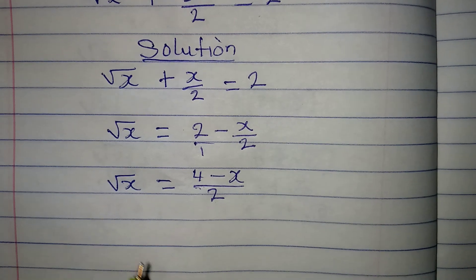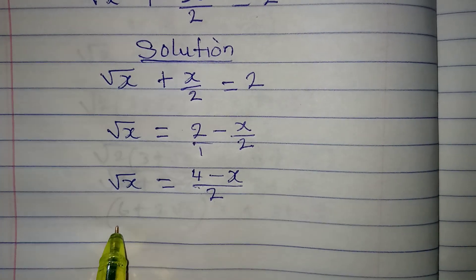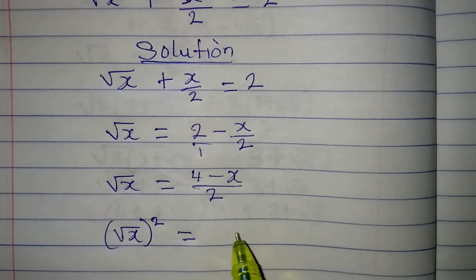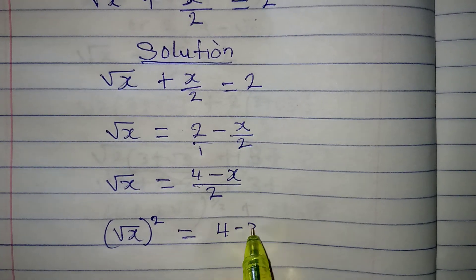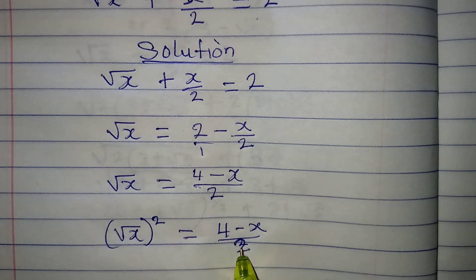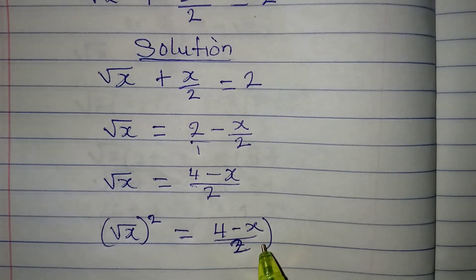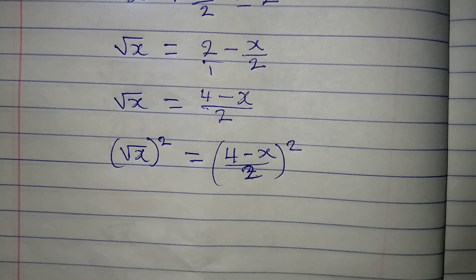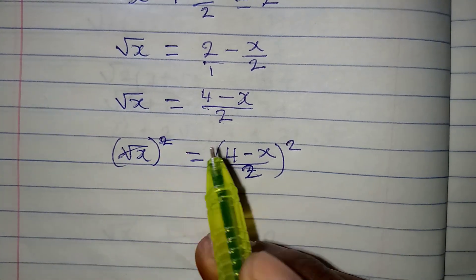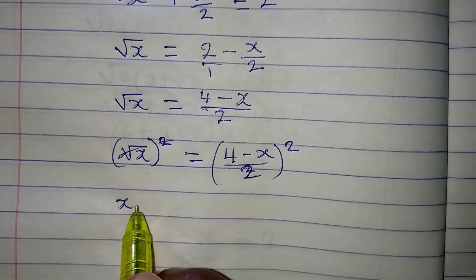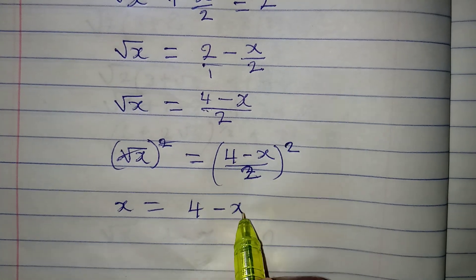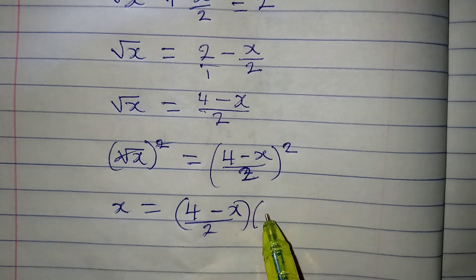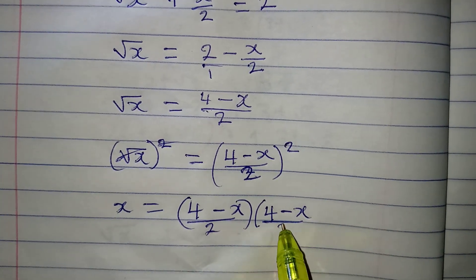Now, the next target is to remove this square root from here and we do that by squaring it. And what we do on one side, we must do on the other side. So this is over 2 and we are going to square it as well so that the square root and the square can cancel each other.